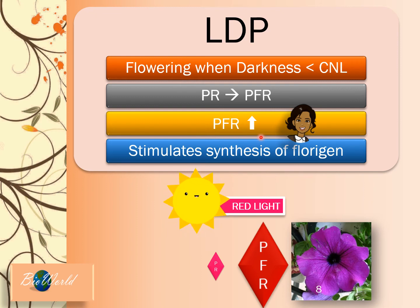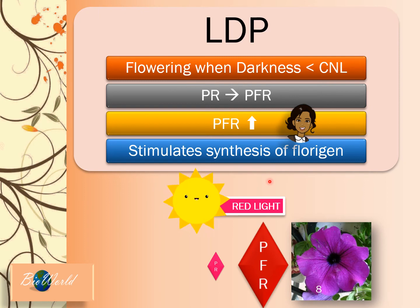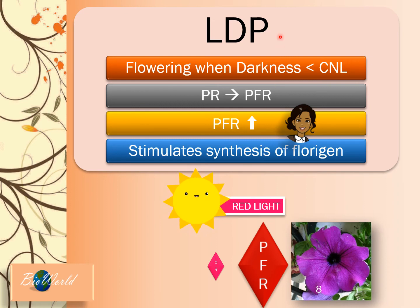This is like when you studied auxin. Remember, in the shoot, auxin concentration must be high to promote cell elongation, but in the root, auxin concentration must be low to promote cell elongation. So it's the same situation here — in short-day plants, phytochrome far-red concentration must be low for flowering to occur, but in long-day plants, phytochrome far-red concentration must be high for flowering to occur.